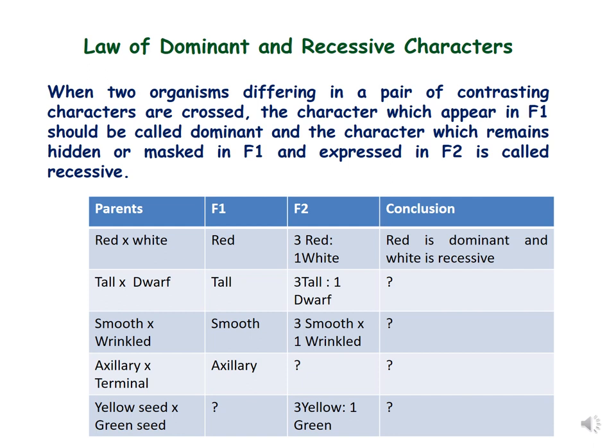Similarly, in the second example, suppose we cross a tall plant with a dwarf plant and in the first generation, F1, we get only tall plants. Then we assume that tall is dominant. After selfing of these F1 plants, suppose we get two characters in F2 — tall plants and dwarf plants — so we conclude that tall is dominant and dwarf is recessive.